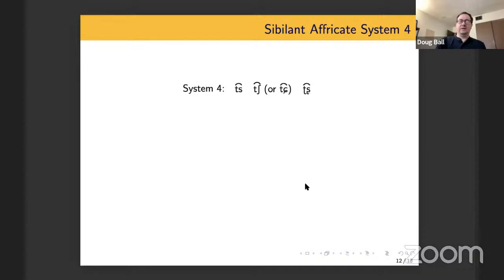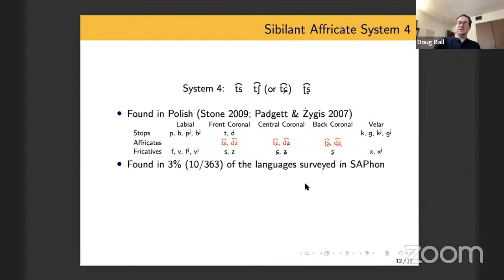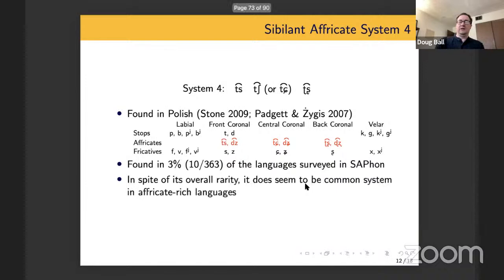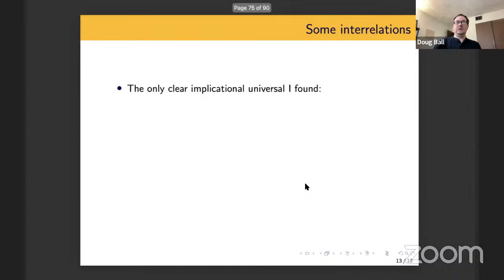System four has three different sibilant affricate places, a front one, a sort of central one, and a back one. And this is what occurs in Polish amongst other languages out there. And in Polish, the affricates come in voiceless voice pairs. This doesn't occur that much in the SAPhon database, only in 3% of the languages there. It does seem that when languages sort of go all in with affricates, which in fact is the kind of language that Nikolayev and Grossman were really interested in. This does appear in languages of that type, because in fact, a big part of their paper is looking at this particular type of system.